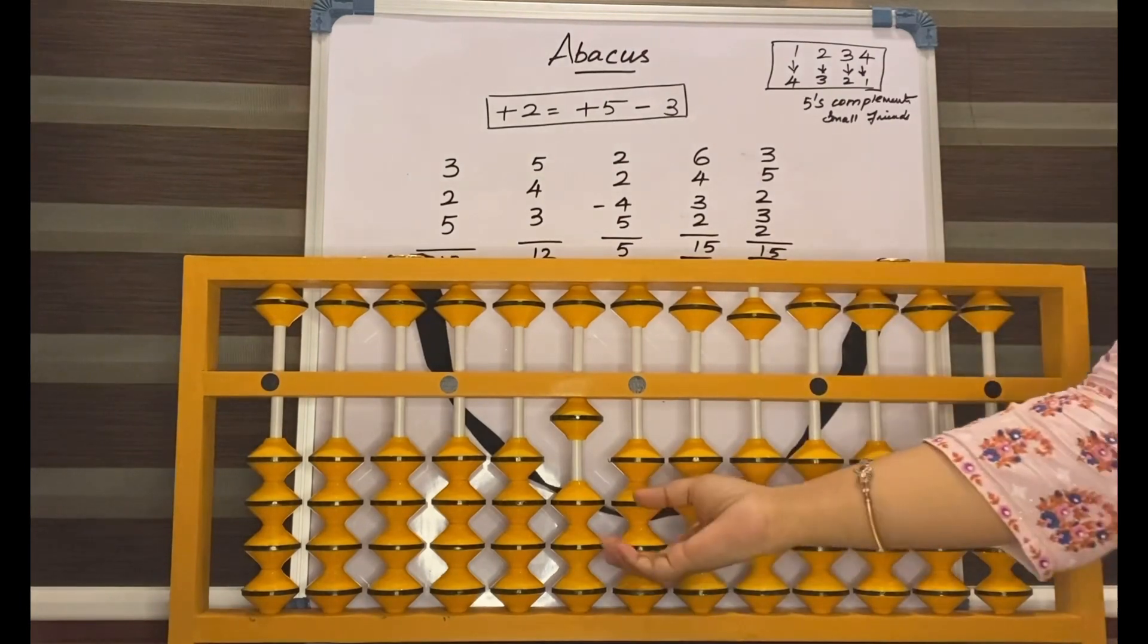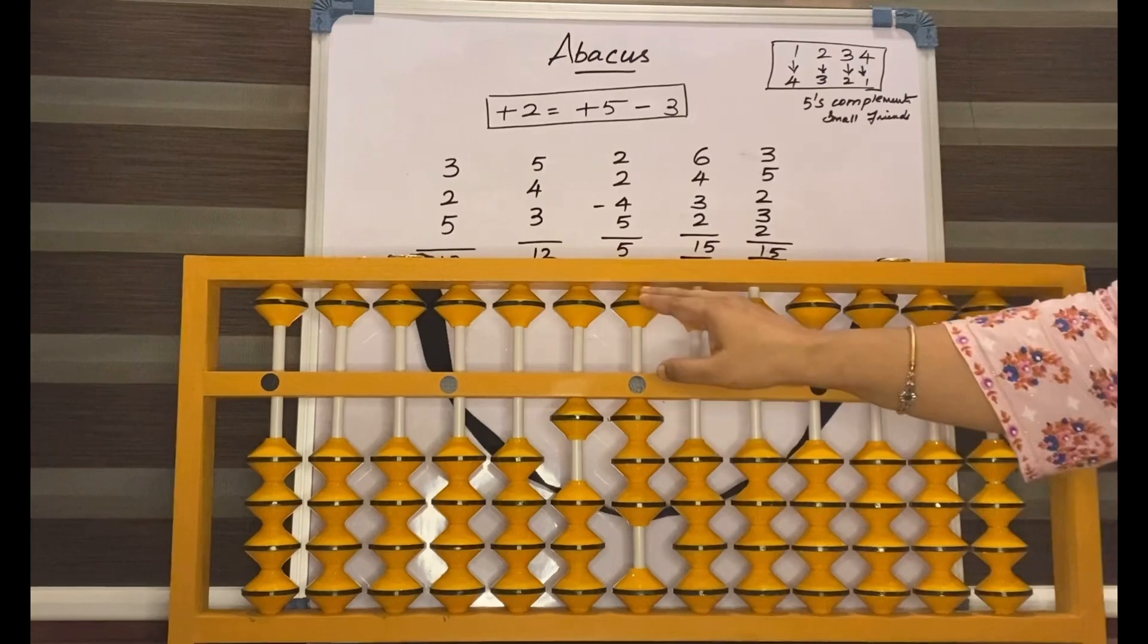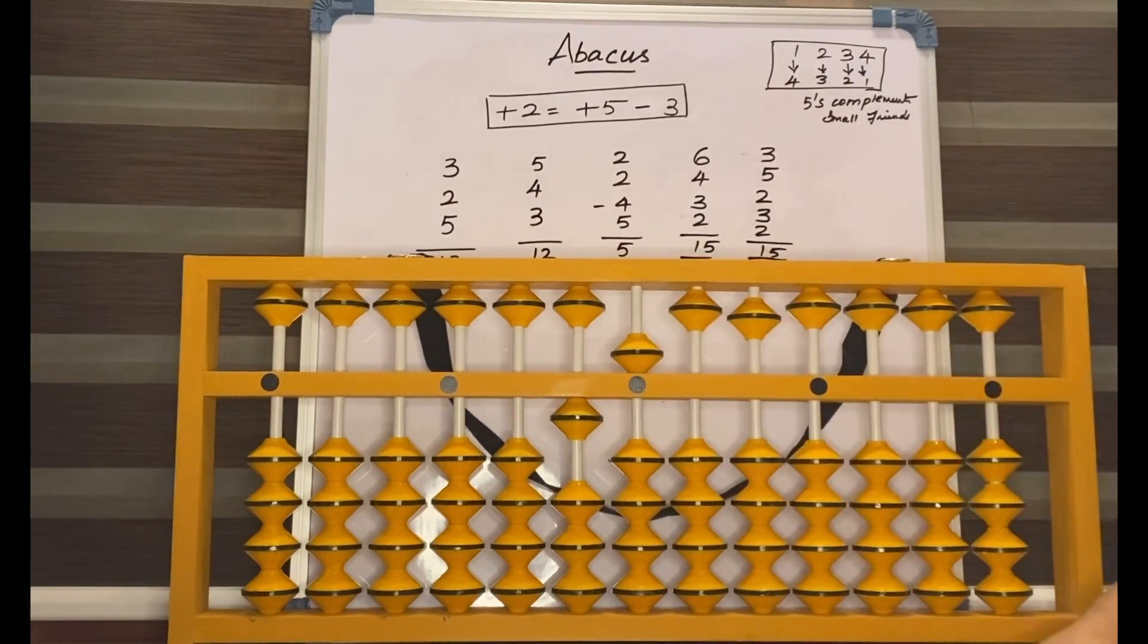Another one, 3. How to add 2 here? Add 5 less 3. Answer is 15.